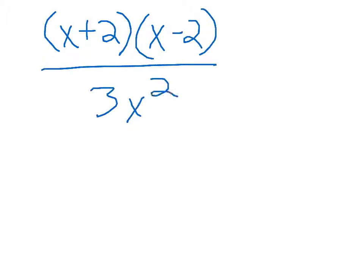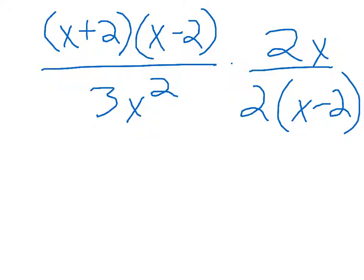From the factored form, x plus 2, x minus 2 over 3x squared times 2x over 2x minus 2. Now that we have this, we can cross out the like terms.